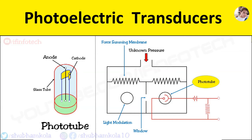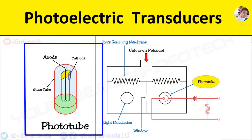In this video, we are going to see the working principle of photoelectric transducer. Here is the diagram which consists of a phototube. The phototube operates on the principle that incident radiated energy on a sensitive surface causes emission of electrons.